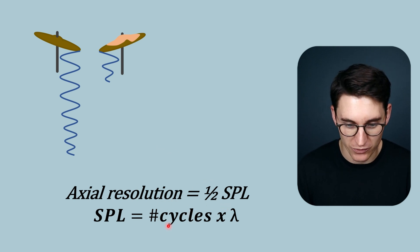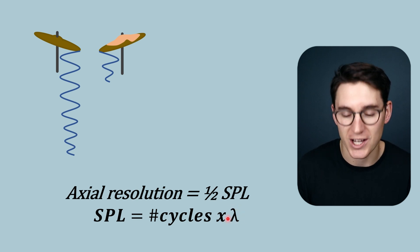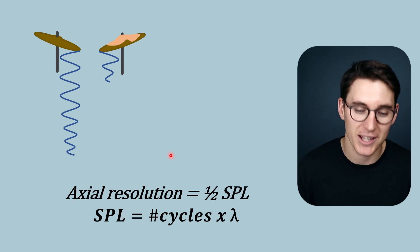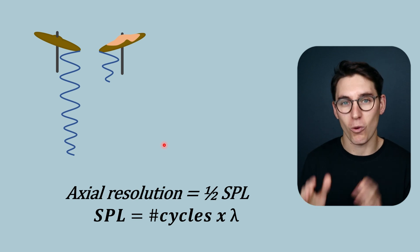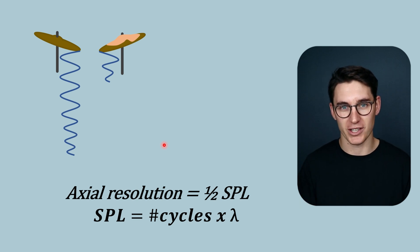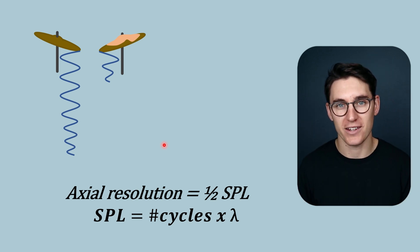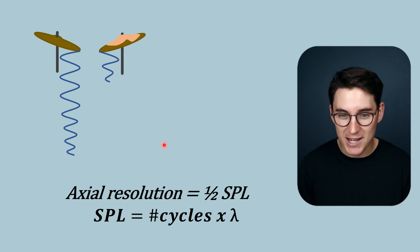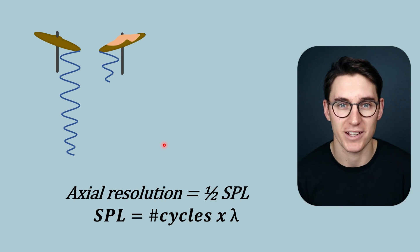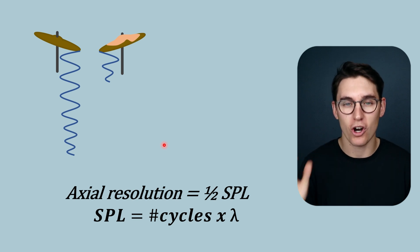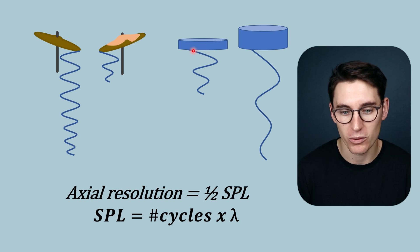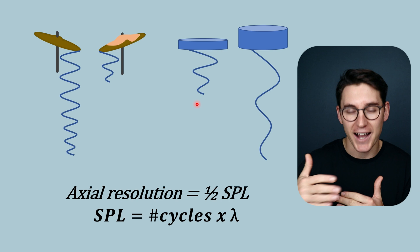The second thing we can do is reduce the wavelength — making our wavelength shorter reduces the spatial pulse length and ultimately improves axial resolution. Our wavelength is related to the thickness of the piezoelectric material. Just as the length of a guitar string is half the wavelength of the wave produced when plucked, the thickness of the piezoelectric material is half the wavelength it produces. Therefore, a thinner piezoelectric material results in shorter wavelengths and subsequently higher frequencies.